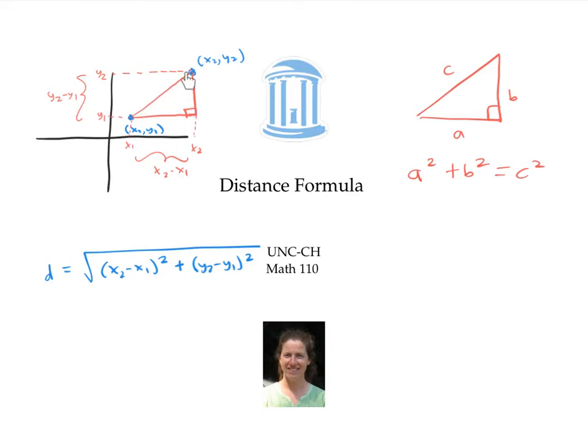this hypotenuse is the distance between the two points that we're looking for. So Pythagorean theorem says the square of this side length, that is x2 minus x1 squared, plus the square of this side length, which is y2 minus y1 squared, has to equal the square of the hypotenuse, that is d squared.